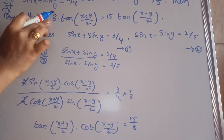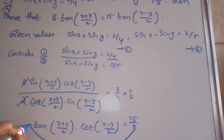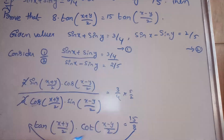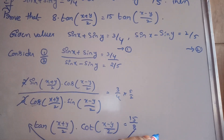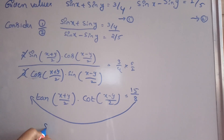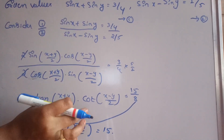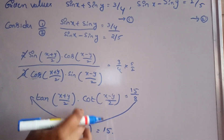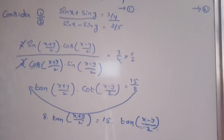Observing the required result — 8 tan((x+y)/2) equals 15 tan((x−y)/2) — we take 8 to this side, and cot((x−y)/2) becomes tan((x−y)/2) since 1/cot equals tan. Therefore 8 tan((x+y)/2) equals 15 tan((x−y)/2). Hence the problem is proved.